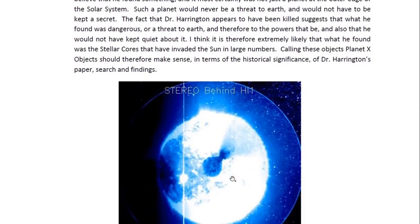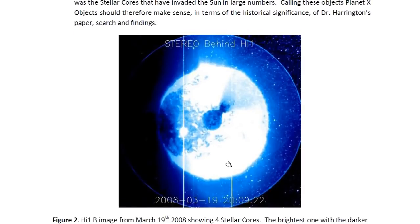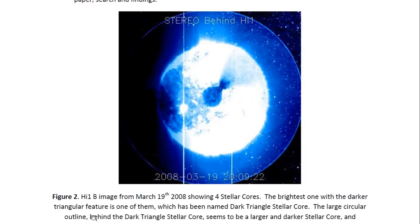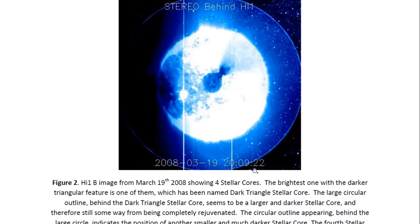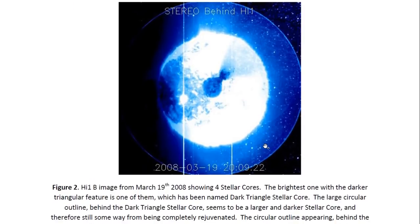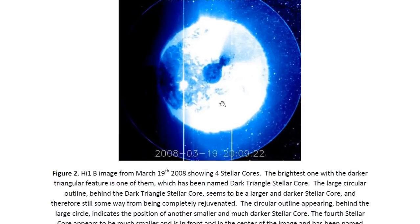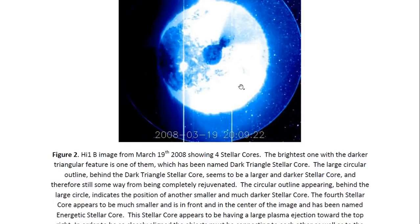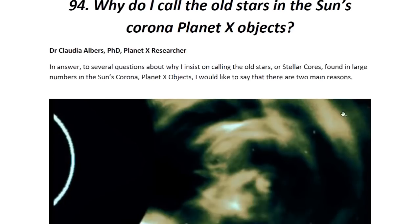Here is an image from Stereo B — an HI-1 image — and we see several huge stellar cores aligned in the same way we saw them in the COR2 image. There are four of them here. There's a huge one in the background, and this one I call the dark triangle stellar core, which seems to be about the same size as the Sun. Then there is a smaller one in front which is having this huge plasma ejection — I've called this one the energetic stellar core. So there's one about the same size as the Sun with a smaller one in front, similar to the arrangement seen earlier.